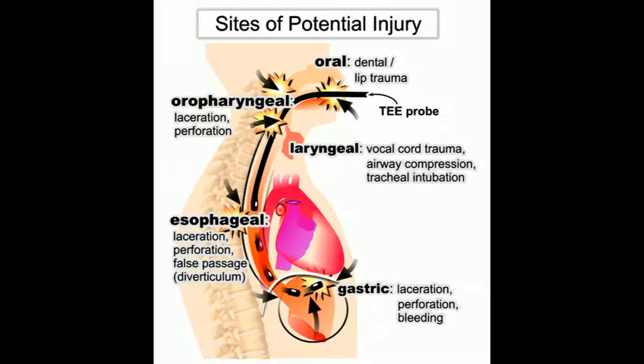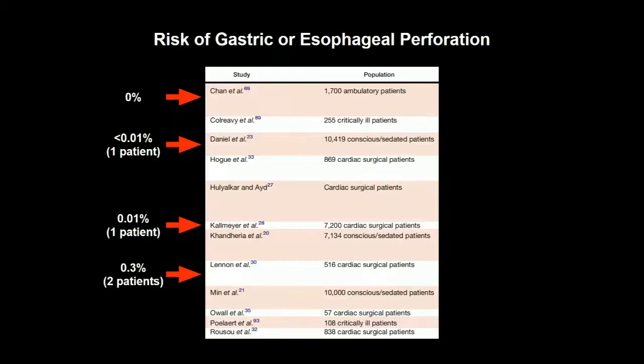People think they're going to do damage with the TEE probe, but it doesn't pan out in studies. These are gigantic studies—7,200 and 10,000 patients. The real complications—esophageal or gastric perforation—just don't pan out to be a problem. When papers say the complication rate is high, they're talking about little lacerations in the mouth, and we're talking about saving people in cardiac arrest and near cardiac arrest.